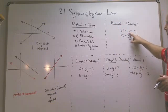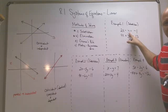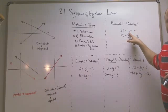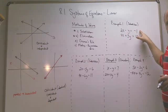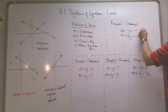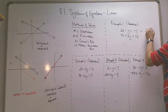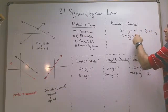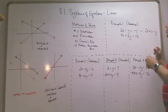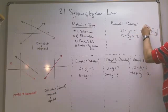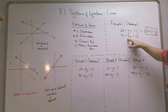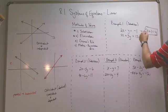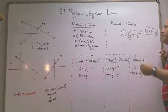I'm going to solve for this y right here — there's no number in front of it, so it's easy to solve for. Moving terms around, this becomes 2x plus 1 equals y. So y is the same thing as 2x plus 1. Now I'm going to substitute 2x plus 1 in for the y of the second equation.